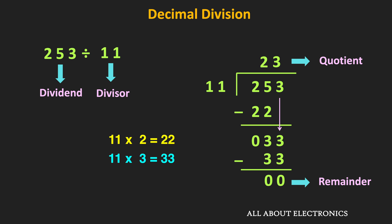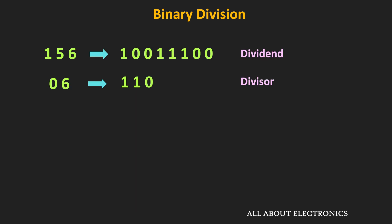Binary division is also very similar, and in fact, since binary numbers consist of only ones and zeros, this division is even simpler. Let's say we want to divide 156 by 6. This 156 in binary is equal to 10011100 — that is our dividend. And 6 in binary can be written as 110, so that will be our divisor.